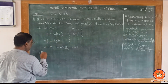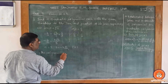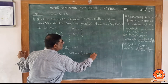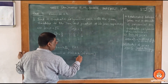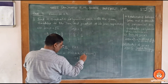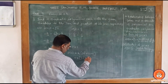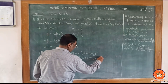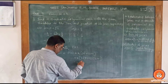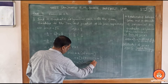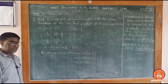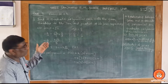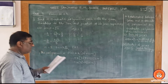The polynomial is p of x equals k into ax square plus bx plus c, which gives k into 3x square minus 3 root 2 times x plus 1. This is a very straightforward type of question that can appear as a one-mark question.